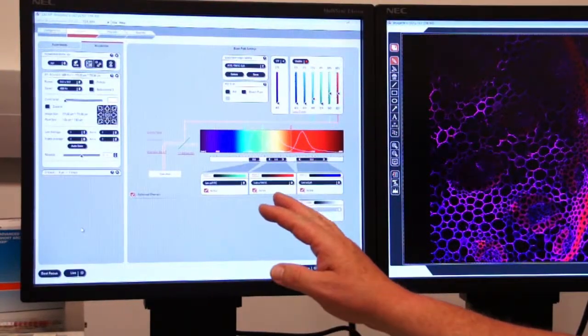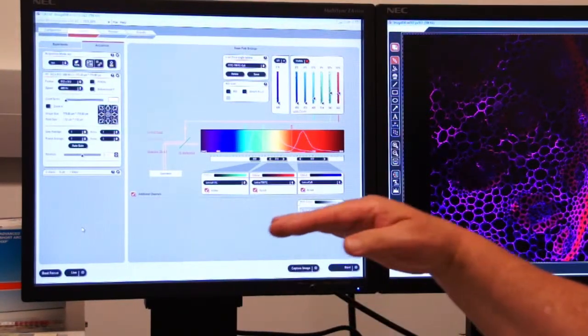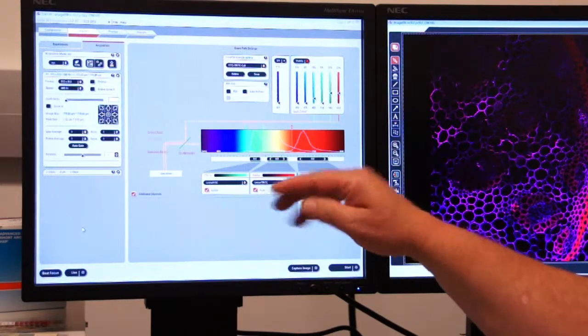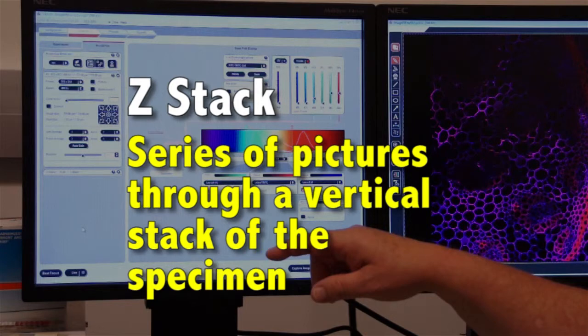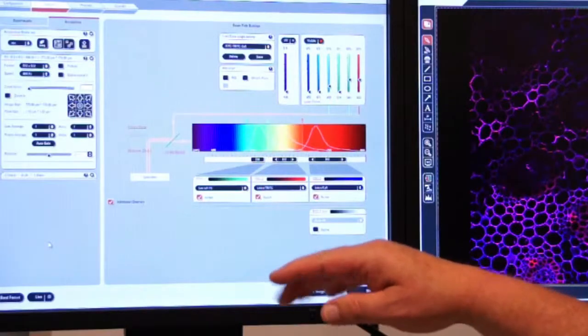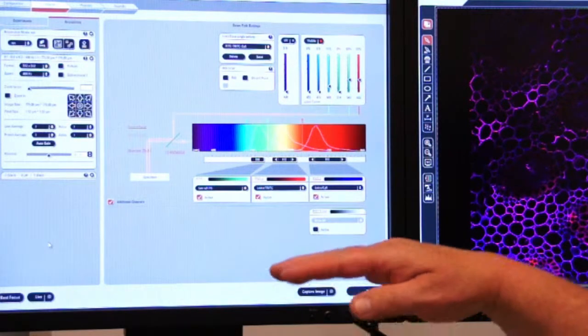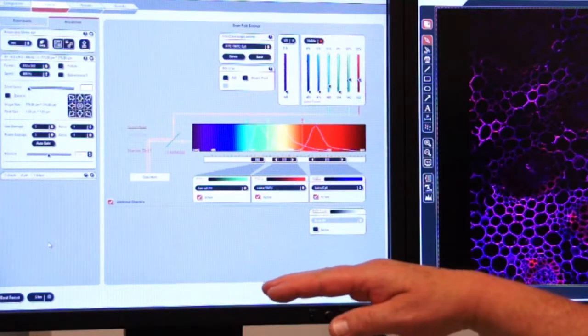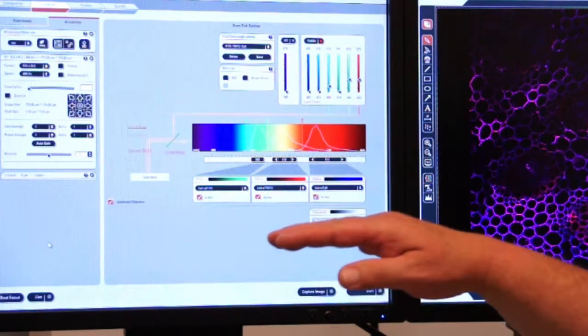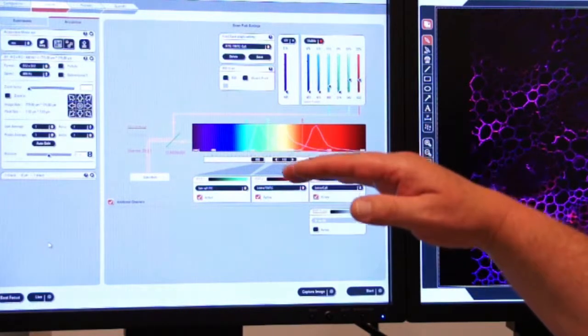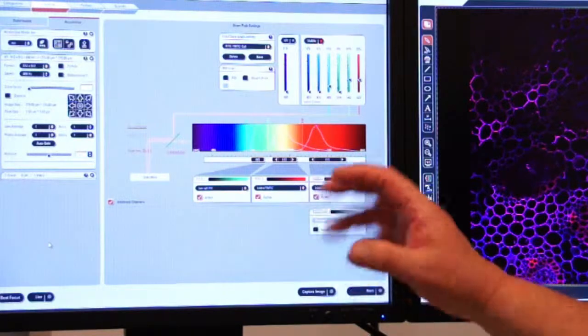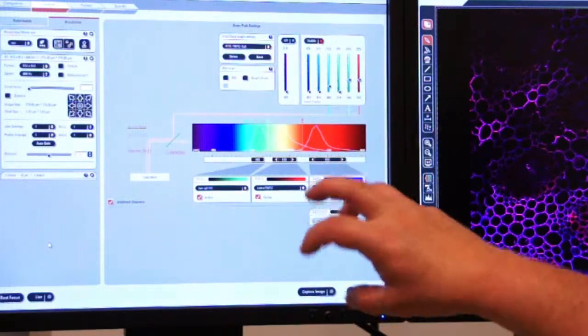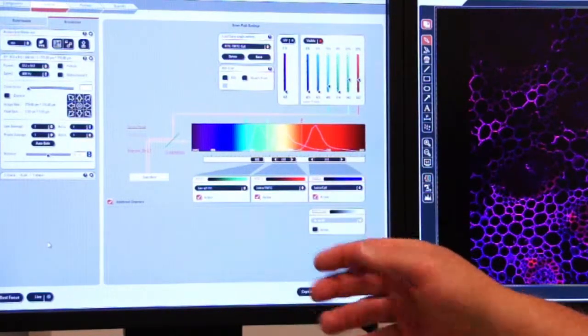Now, we will cover what is called a Z-Stack. We're going to take a series of pictures through a vertical stack of our tissue. So we're going to focus on one level, tell the system to begin capturing images. It's going to capture images all the way through that Z-Stack, and then we'll have a complete set of images that we can then turn into a 3D image to manipulate, or we can turn it into a movie.